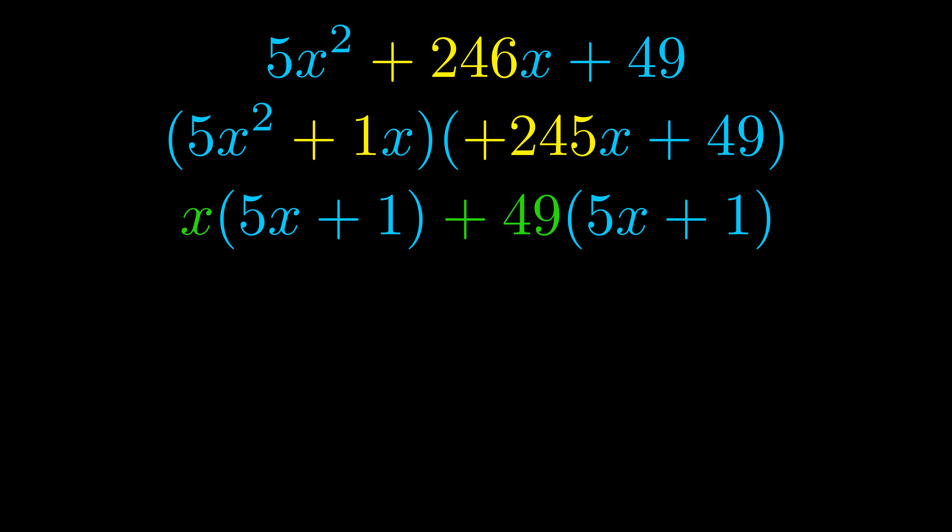Notice also how what remains inside of the parentheses is the same in both cases. The blue values are the same. Those blue values will become one of our factors and we will combine the two green values, the GCFs that we pulled out, to get the other one. And that is our fully factored equation.